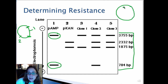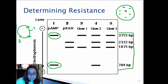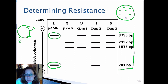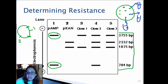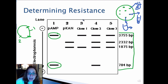Say on your agarose gel you had 20 different clones come up. You're fairly sure each one has your plasmid because they grew on media containing both ampicillin and kanamycin, but you never know for certain. So you take individual colonies, grow each E. coli colony in media with both antibiotics, do plasmid preps of each clone, then cut the plasmid with restriction enzymes and run it on a gel to confirm you have the correct chimeric plasmid.